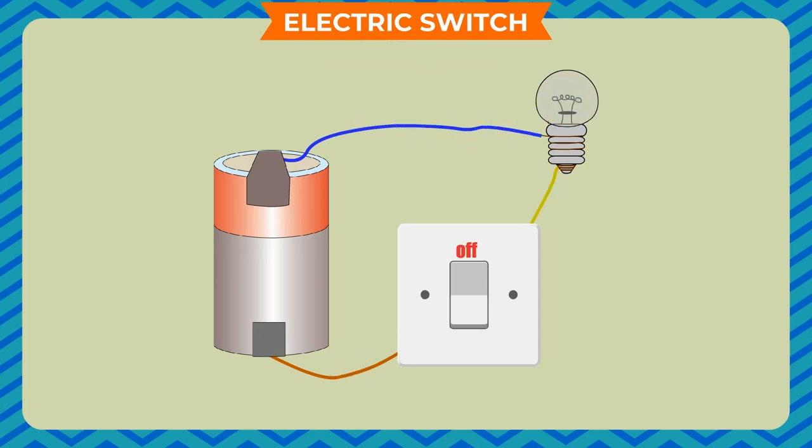On the other hand, when the switch is off, the circuit is said to be an open circuit. In this case, the circuit breaks off and electric current does not flow through the electric device connected to the circuit, and thus the device does not work.